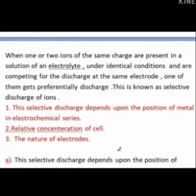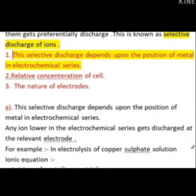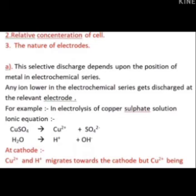When two or more ions of the same charge are present in an electrolyte solution under the same conditions, there is competition between them — one gets preferentially discharged. This is known as selective discharge of ions. Selective discharge depends on three factors: first, the relative position of the ions in the electrochemical series; second, the relative concentration of ions; and third, the nature of the electrode used.